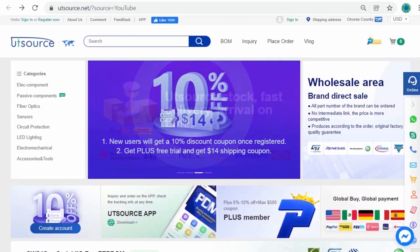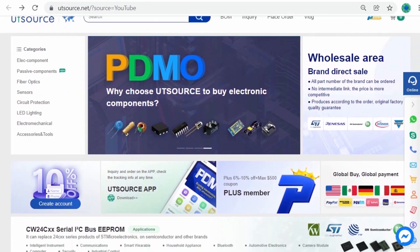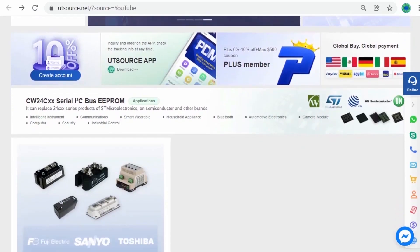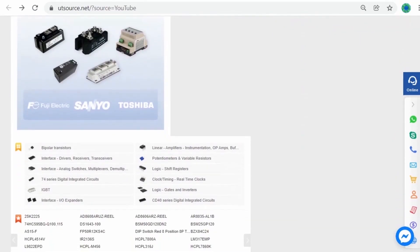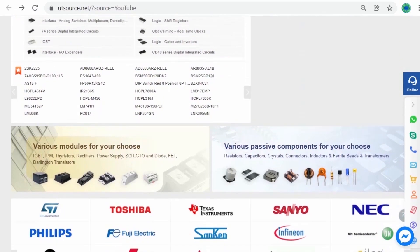UTSource.net is a professional purchasing website in the field of electronic components. UTSource.net provides different types of electronic components such